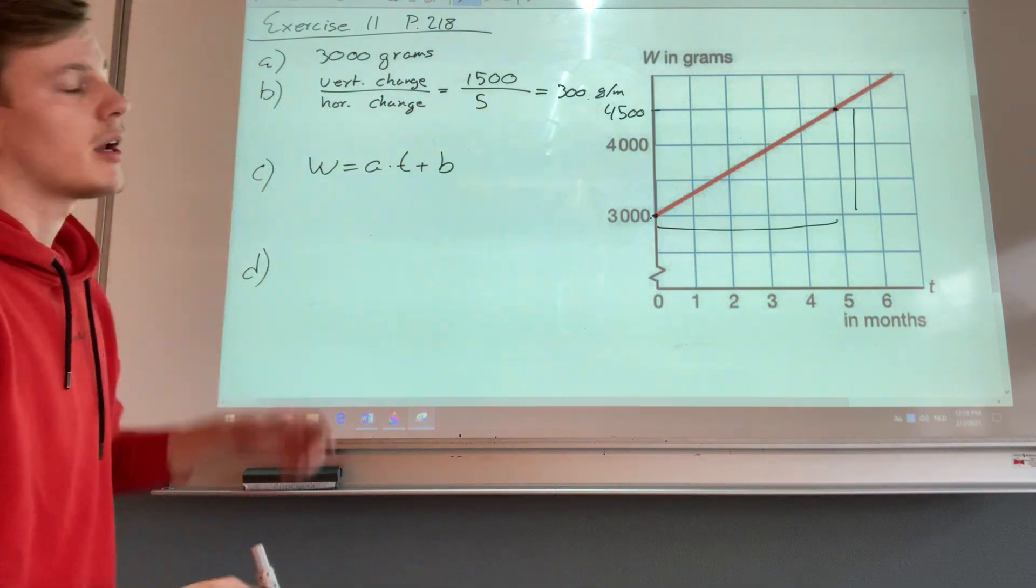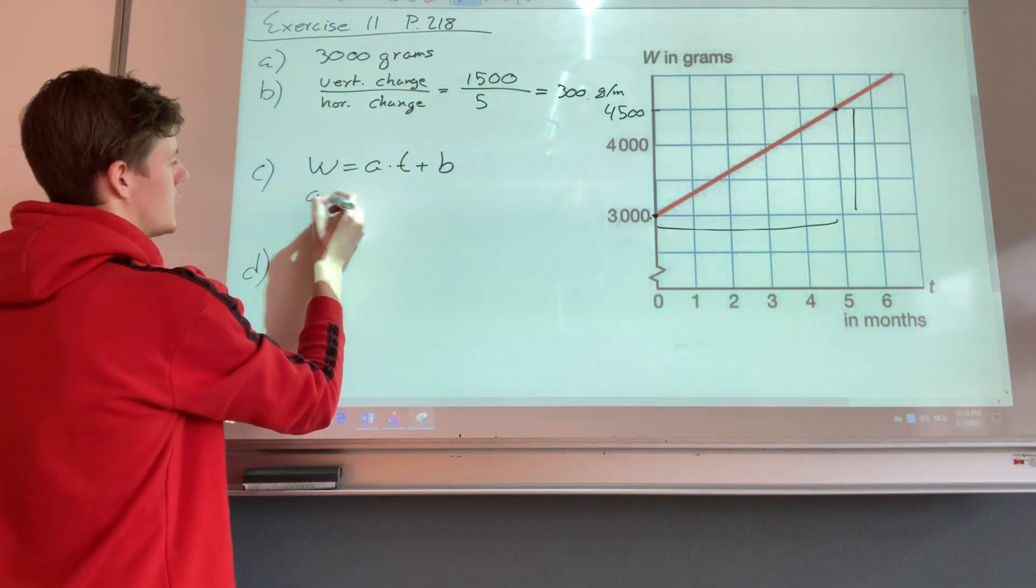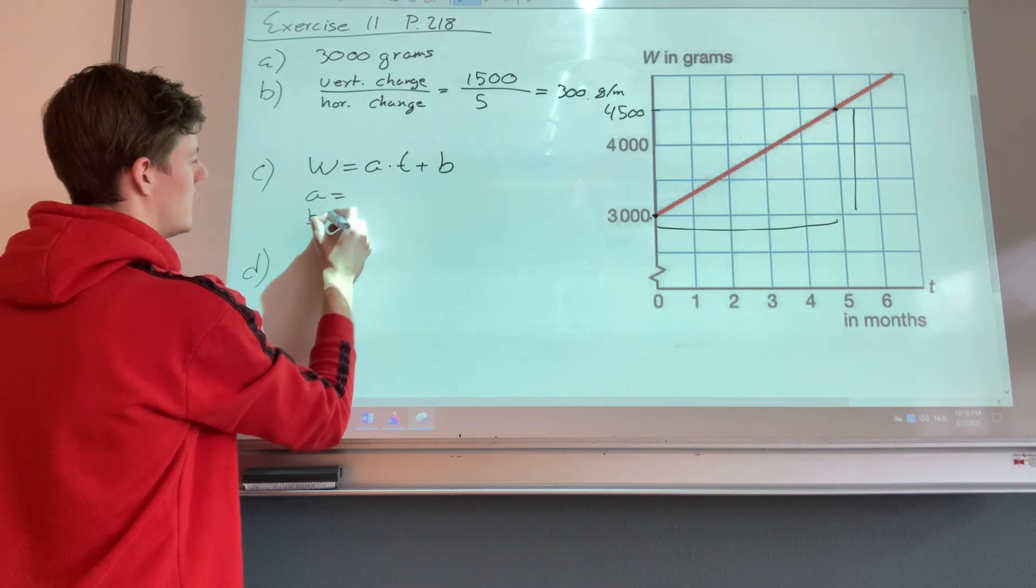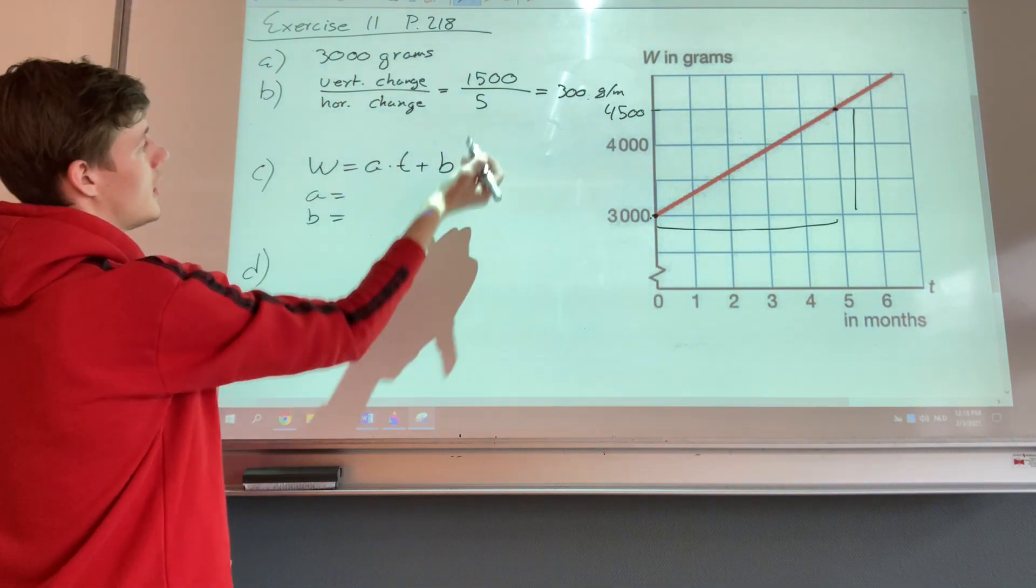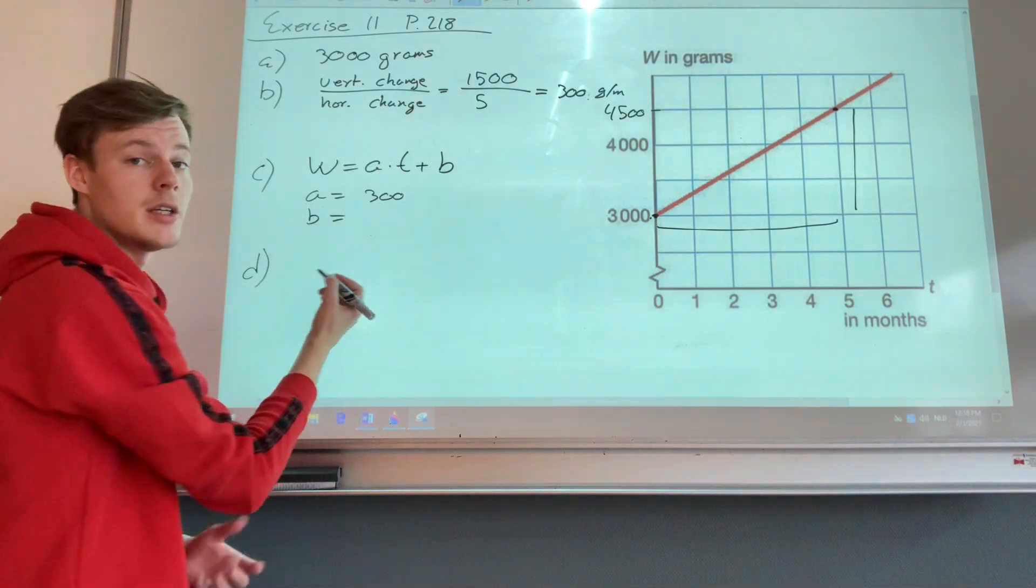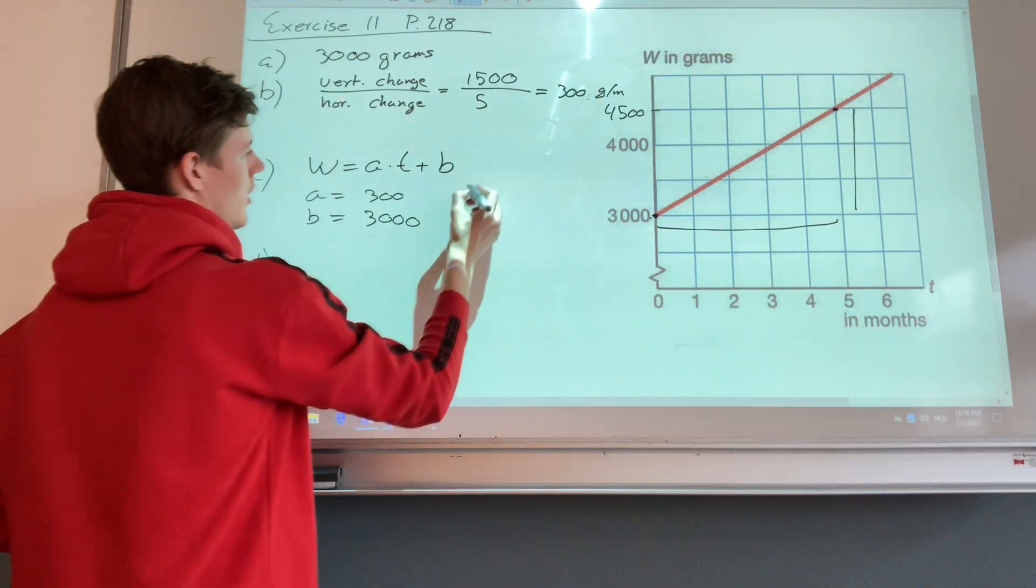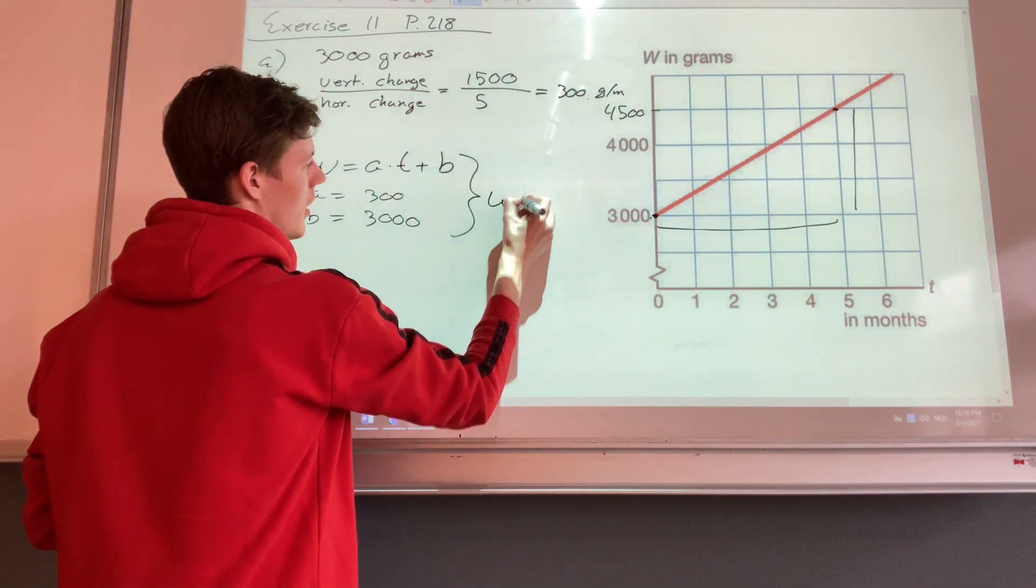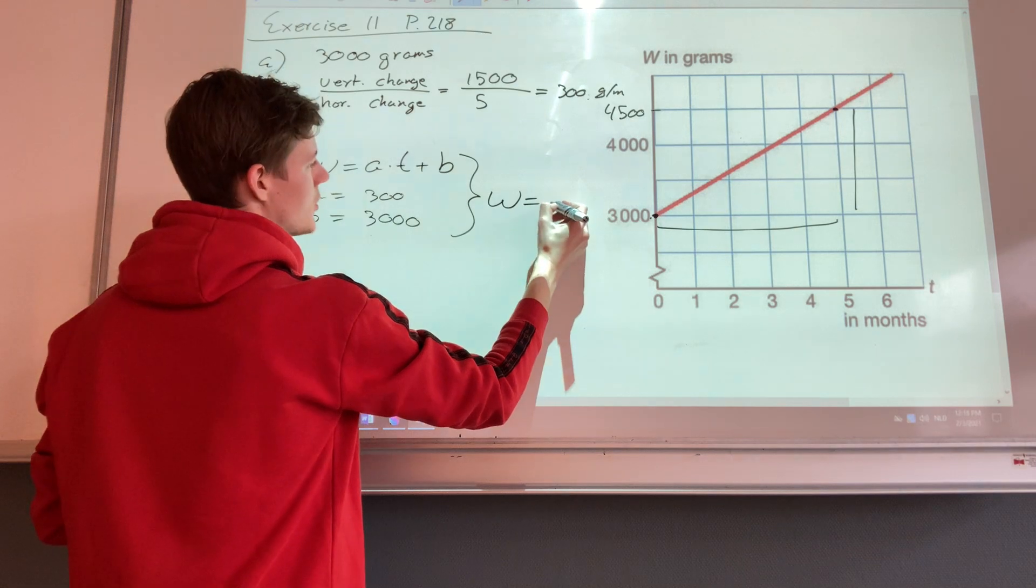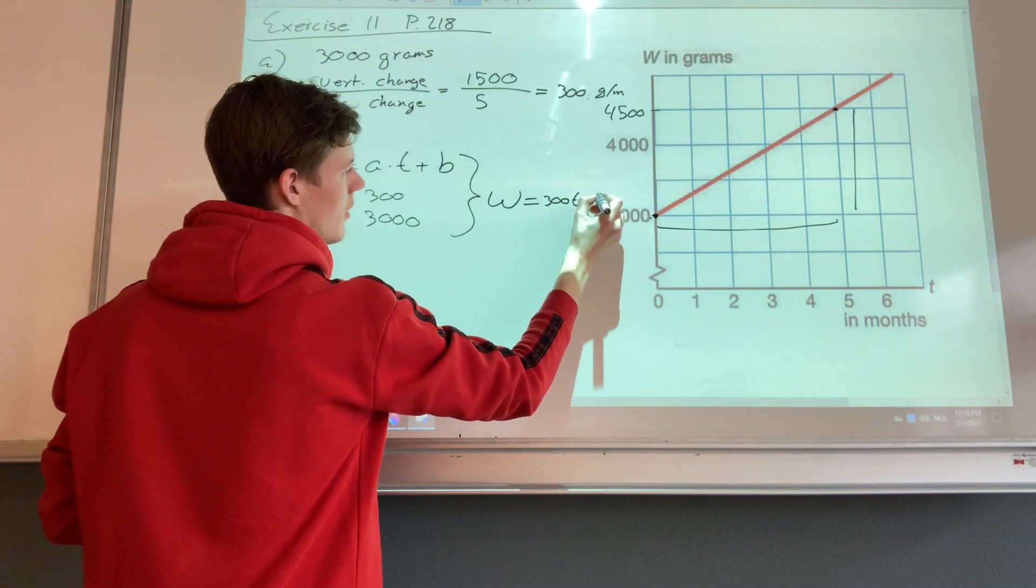Well luckily we already found it out in the first two questions, so we can actually just fill those in. So a is the change which is 300, and b is the y-intercept which is 3,000. This gives us a nice formula with w equals 300 times t plus 3,000.